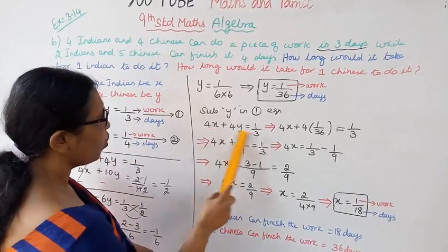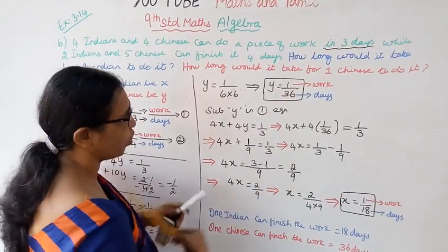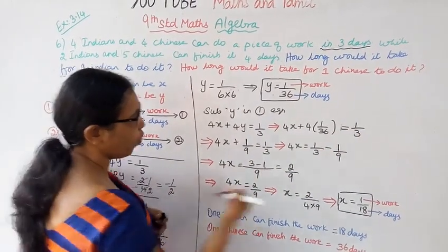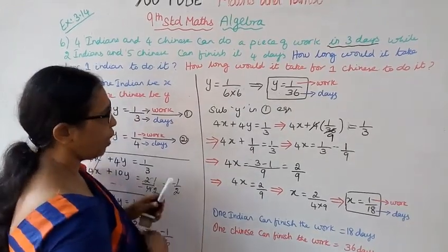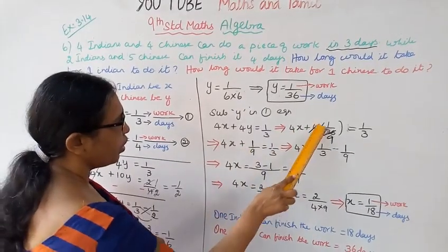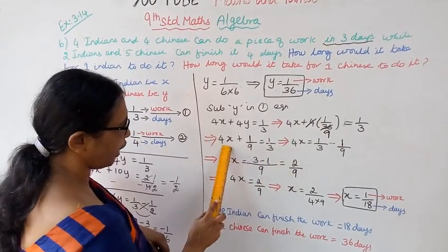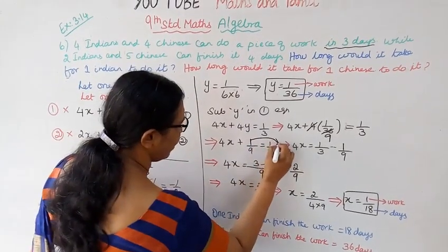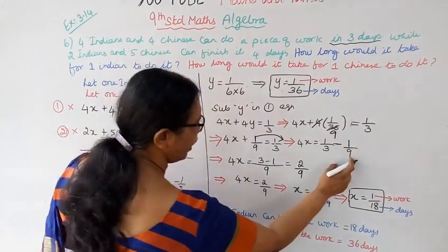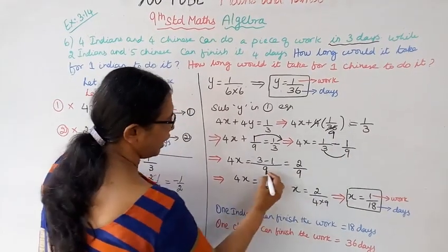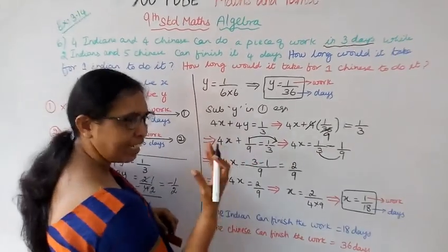Now substitute y into equation one. 4x plus 4y equals 1 by 3. So 4x plus 4 times 1 by 36 equals 1 by 3. Simplifying: 4x plus 1 by 9 equals 1 by 3. Therefore 4x equals 1 by 3 minus 1 by 9.